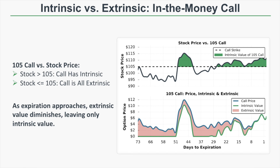Now that you know how intrinsic and extrinsic value apply to call options, let's look at visual examples showing how they change through time. In this example we're looking at a call with a strike price of $105. Whenever the stock trades above $105, the 105 call has intrinsic value. When the stock is at or below $105, the call has no intrinsic value and any value it has is extrinsic. As expiration approaches, extrinsic value diminishes, leaving only intrinsic value.